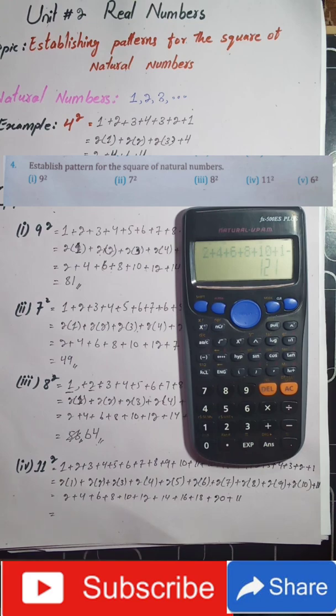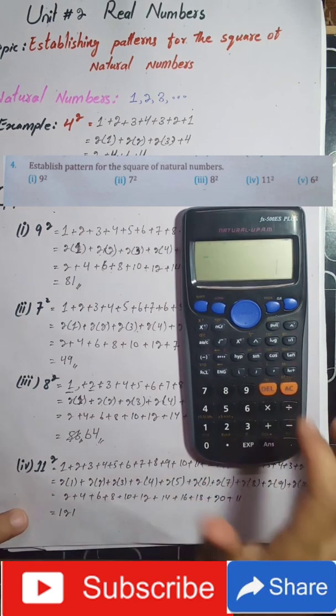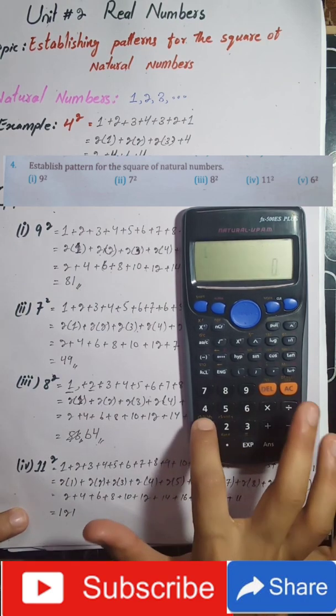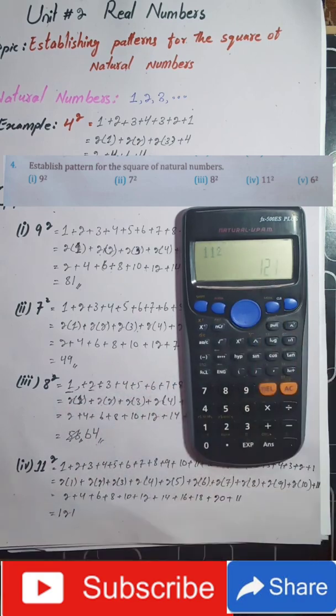Our answer is 121. I will verify it: 11 squared is also 121. Yes, it is right — and there it is confirmed.